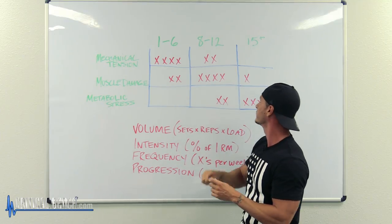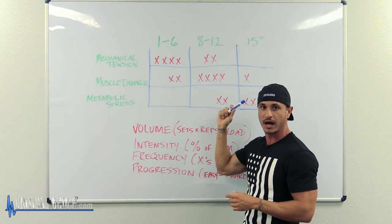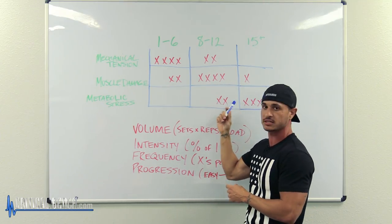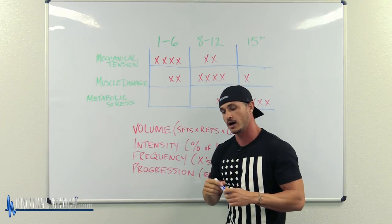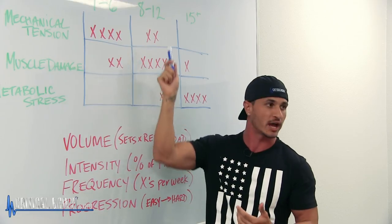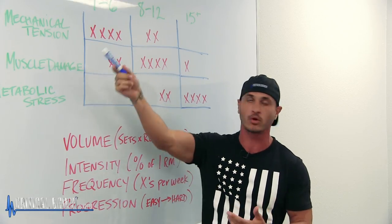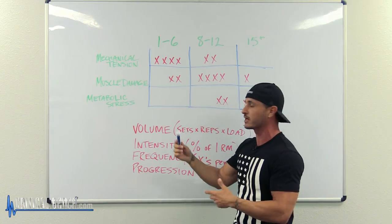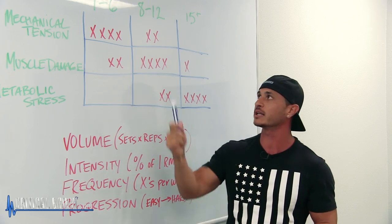And when you become stronger in the 8 to 12 rep range, for example, you will build more muscle, which will also make you stronger. The same thing with metabolic stress. You are building the lactate threshold that's going to allow you to do your heavier work for a longer period of time. Maybe you'll get more reps, things of that nature, and so you'll grow that way.